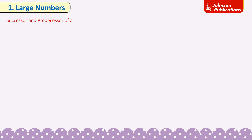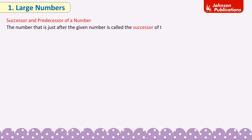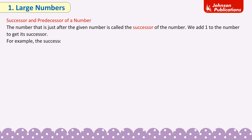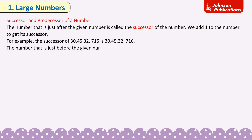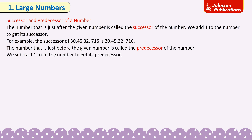Successor and predecessor of a number: The number just after a given number is called its successor — we add 1 to the number to get its successor. For example, the successor of 30,45,32,715 is 30,45,32,716. The number just before a given number is called its predecessor — we subtract 1. The predecessor of 3,79,38,185 is 3,79,38,184.